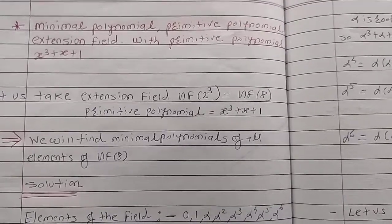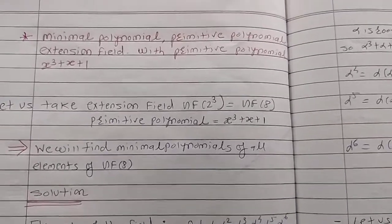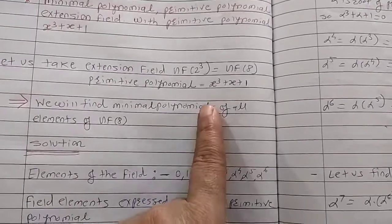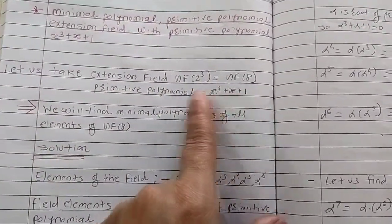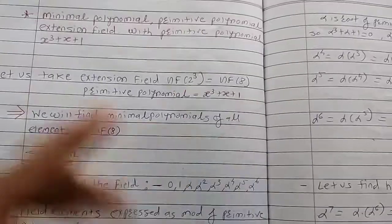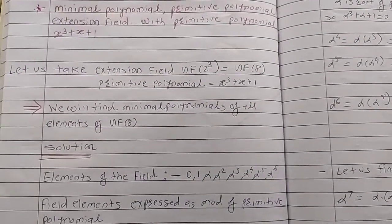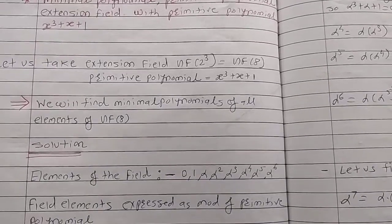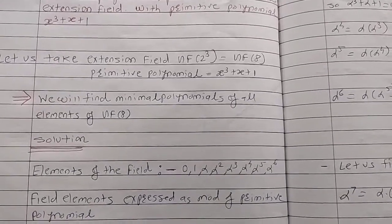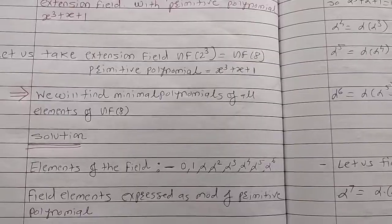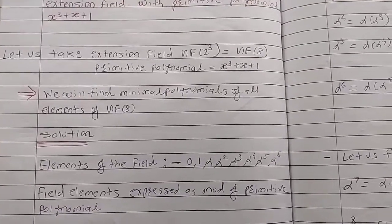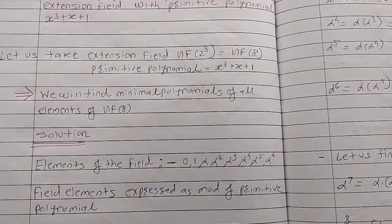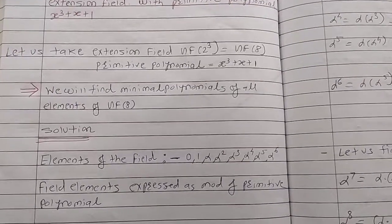Let us study how to obtain the minimal polynomials of Galois field 8. The Galois field GF(2³) is given, and its primitive polynomial is x³ + x + 1. What is a primitive polynomial and what are its criteria — these were discussed in the previous videos.